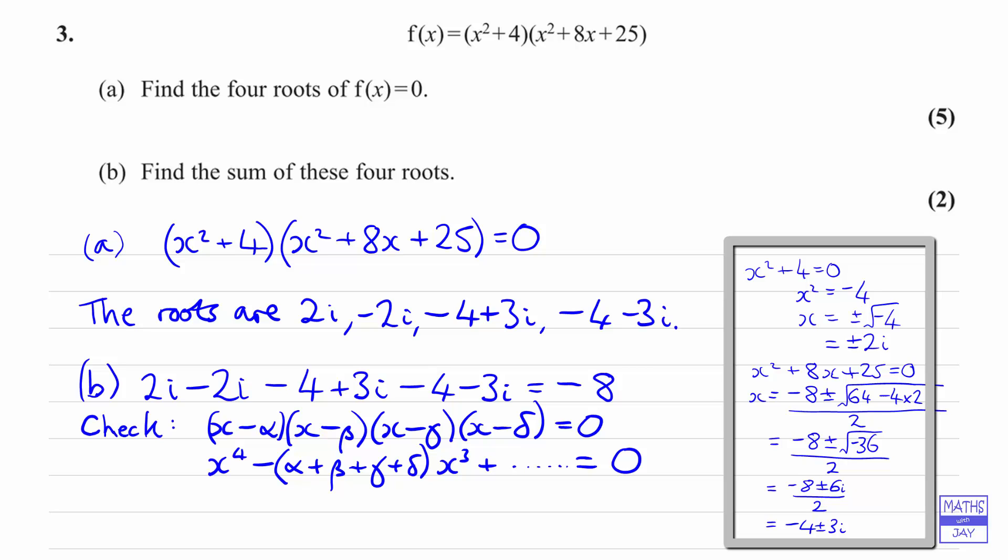So if we now look back to the equation, the function that we were given is actually simple because there's only one way in which we can get x³, because there is no term in x in the first bracket. The only way of getting x³ is by multiplying x² by 8x.